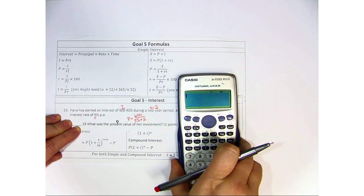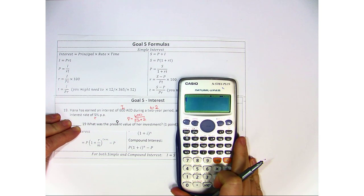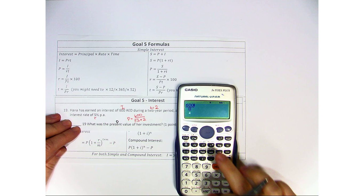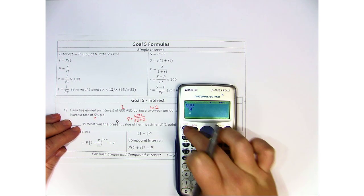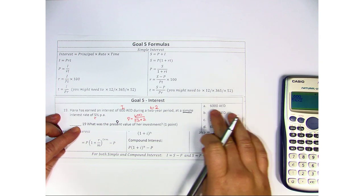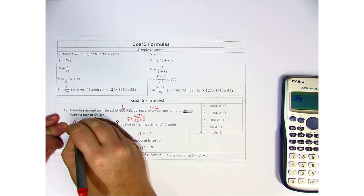And we'll get out our calculator. If your calculator hasn't already been reset, go ahead and hit shift nine to clear it back to normal. So fraction six hundred divided by five percent times two, and we get the answer of six thousand, or in our case, A.